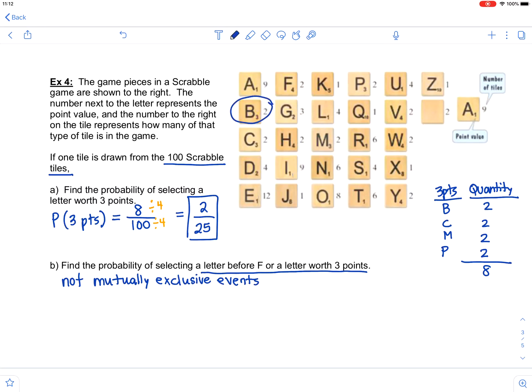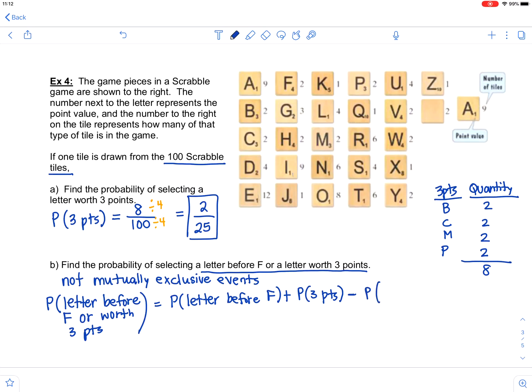Meaning I look at the letter B and it is before F and it is worth three points. So those events can happen at the same time. So in that scenario, if I'm trying to find the probability of a letter before F or worth three points, I have to take the probability of getting a letter before F plus the probability of getting a letter worth three points. But if I stop there, then I'm counting certain tiles twice. So then I need to subtract away the probability of both occurring at the same time. Letter before F and worth three points.